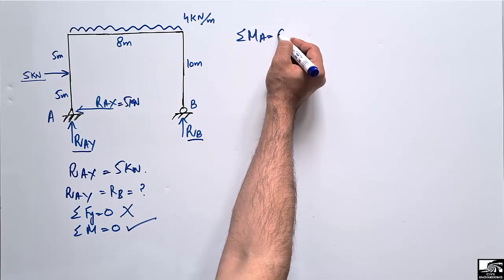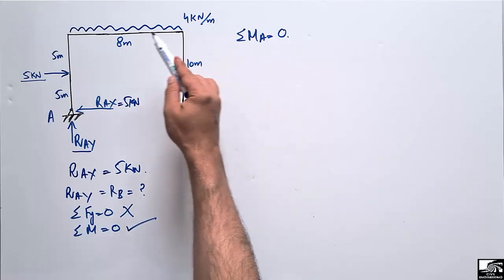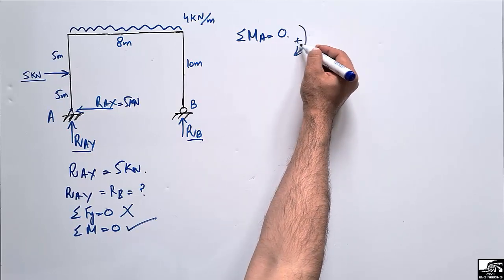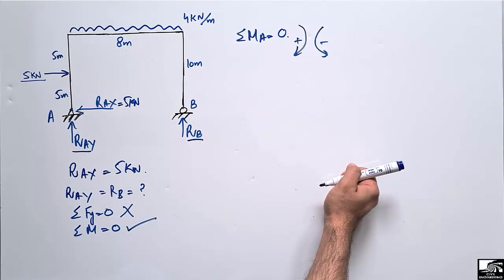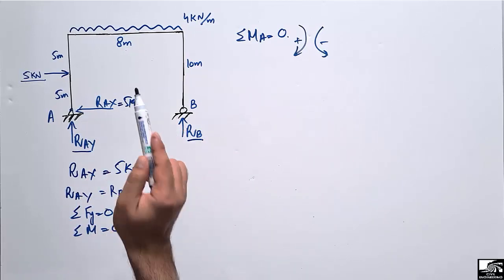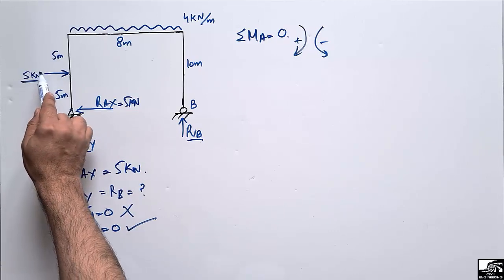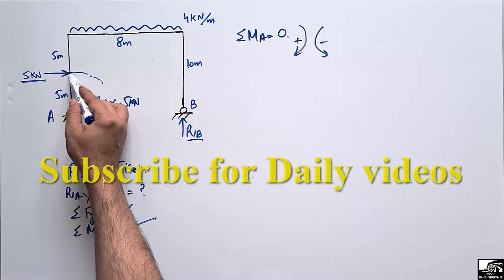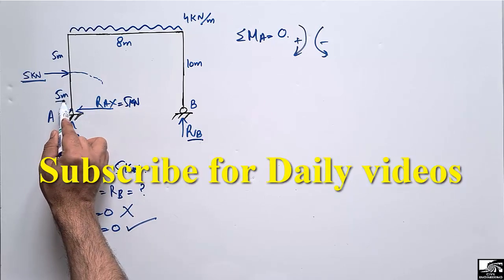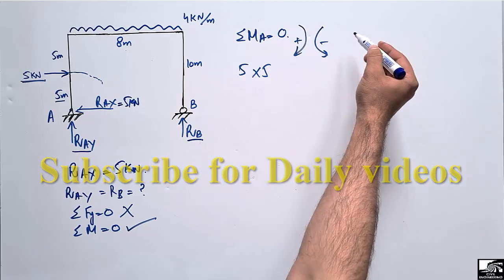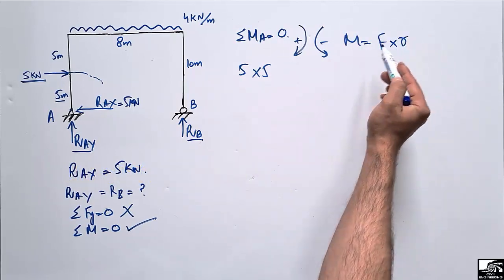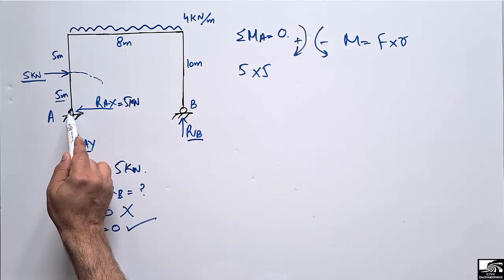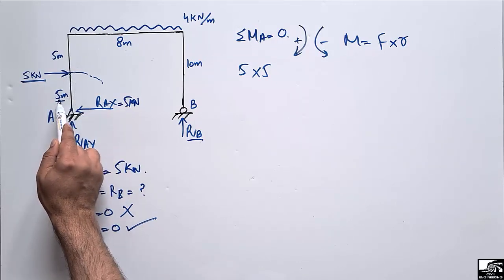Taking summation of moments at point A equal to zero, we assume clockwise moments are positive and anti-clockwise moments are negative. The 5 kN horizontal load creates a clockwise moment about A. The moment arm is the perpendicular distance from the load to point A, which is 5 meters. So the moment contribution is 5 × 5 = 25 kNm.